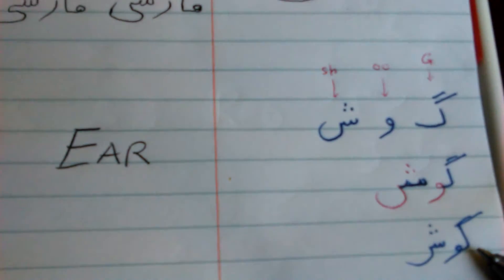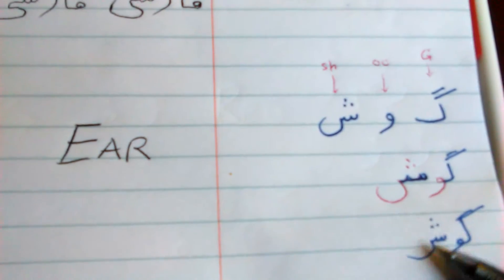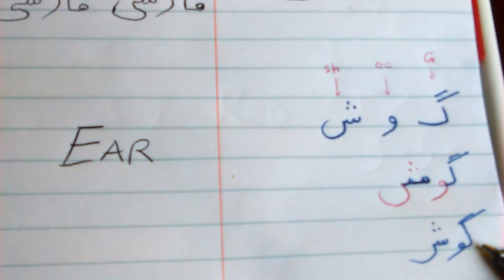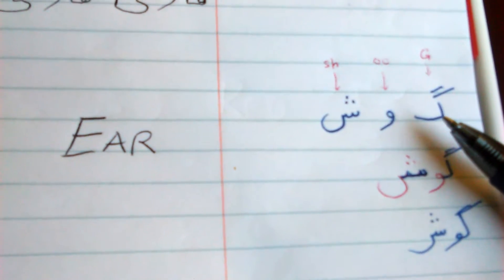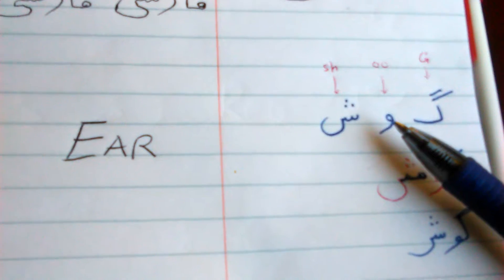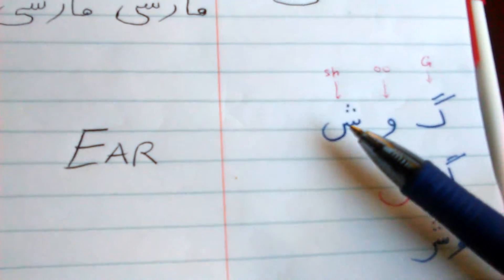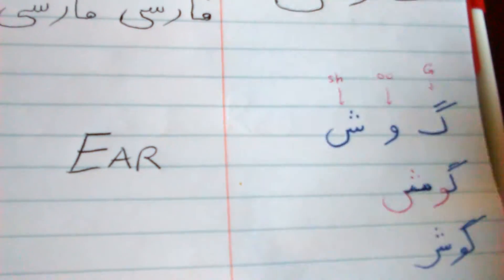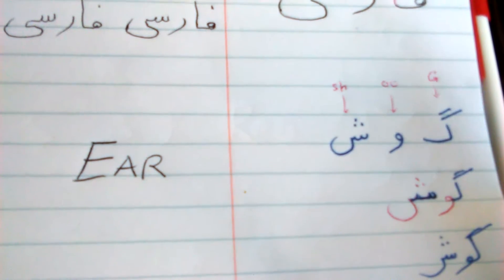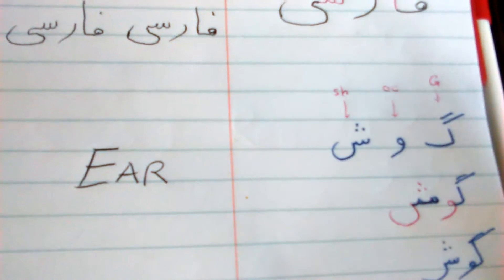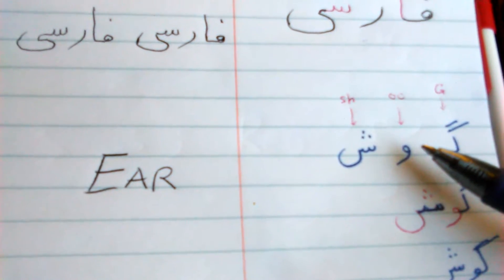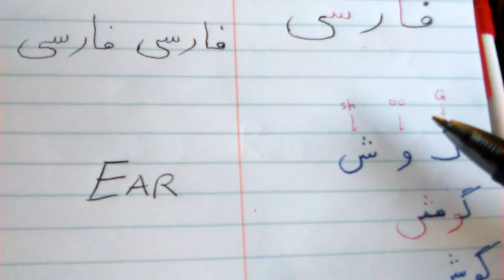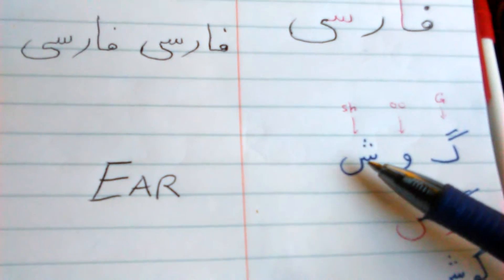Let's go to GUSH. GUSH means ear. KE, VOW, SHE. KE, which is just like a G, VOW — here it's gonna sound like a double O — U and SHE.